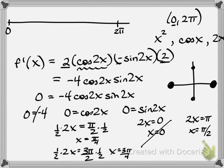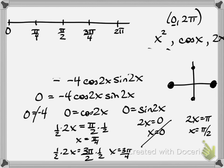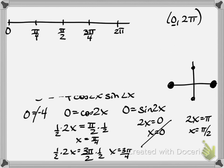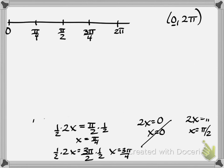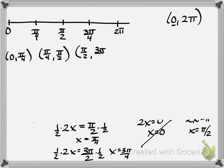So our critical numbers to place on the number line are π/4, π/2, and 3π/4. We need these in the correct order as they appear on the unit circle so our intervals are right. We test between 0 and π/4, between π/4 and π/2, between π/2 and 3π/4, and between 3π/4 and 2π.